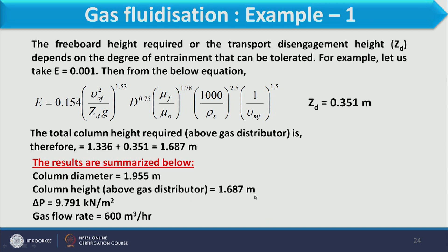Note that the column diameter is larger than the height in this design. To calculate total height, contributions from all zones must be combined. Increasing gas velocity would increase the required height. All these factors must be considered when designing the fluidizer — the key outputs are diameter, height, and pressure drop.